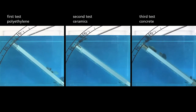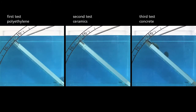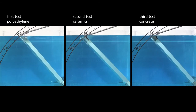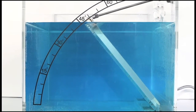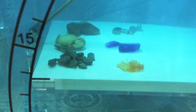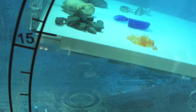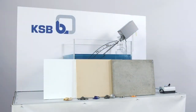Concrete surfaces, however, need to have an inclined angle of more than 45 degrees to prevent deposits. The requirements for the design of suction chambers which prevent deposits are stipulated in the applicable recommendations, regulations, and standards.